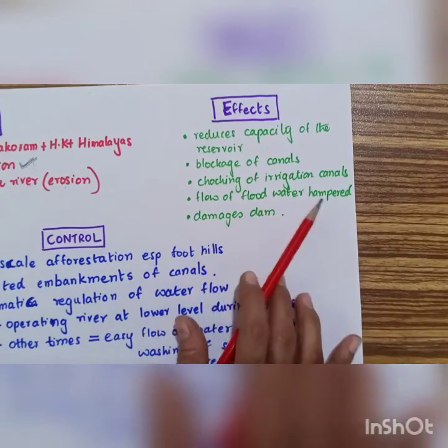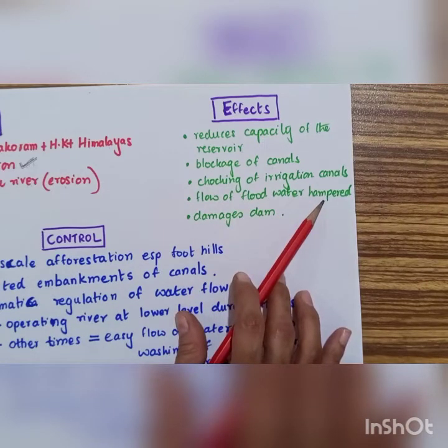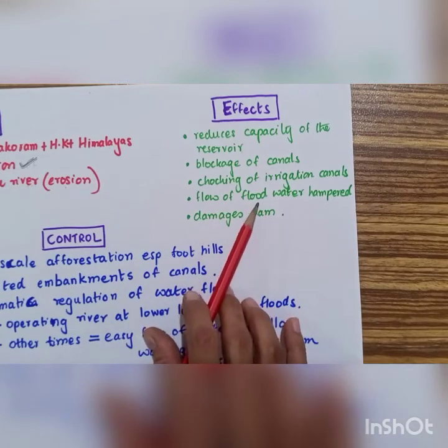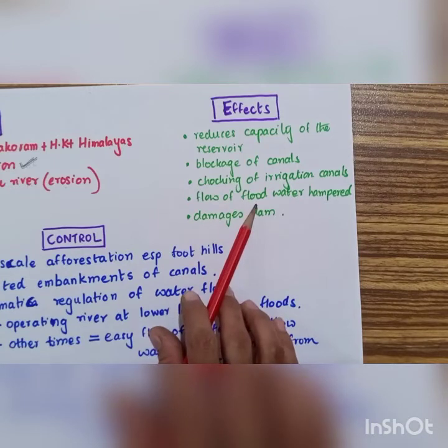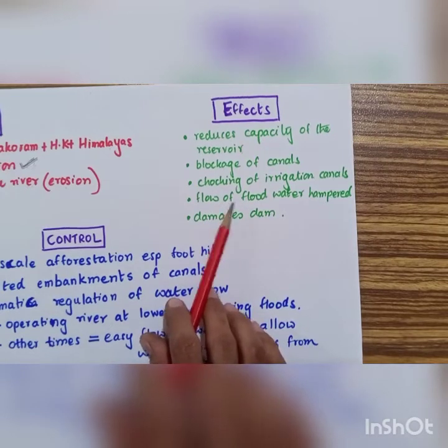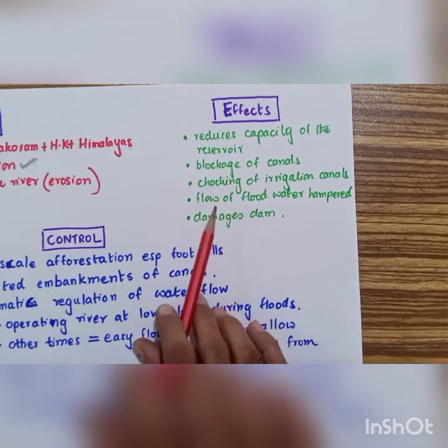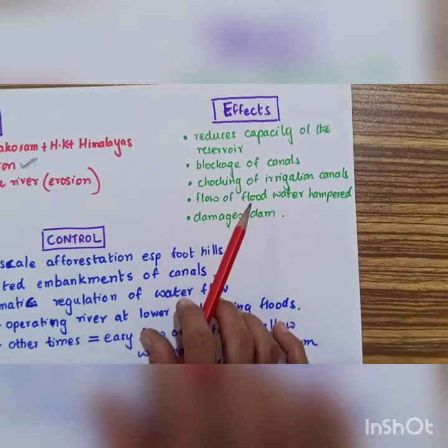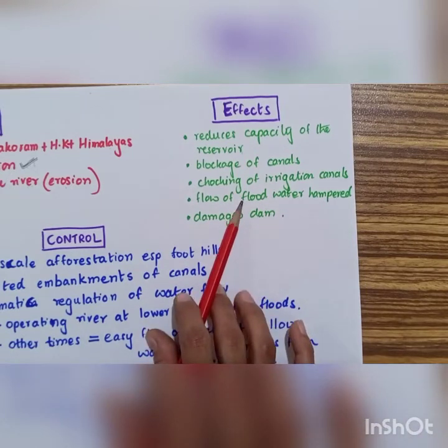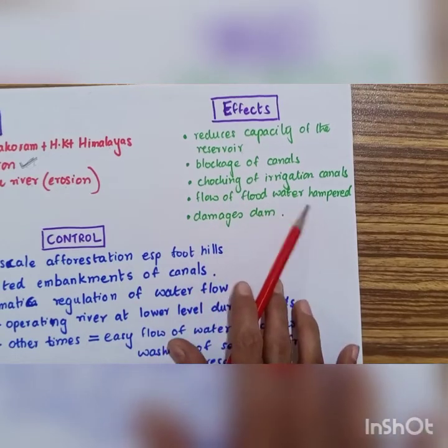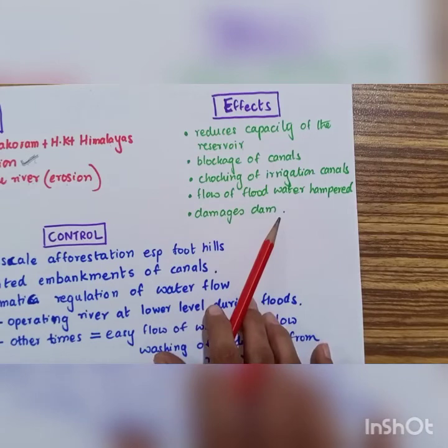Then the flow of the flood water is also hampered because our country is at present facing terrible damages because of floods. One of the reasons why we could not manage this menace of flood is because of siltation as well. The capacity of our reservoirs is less. The capacity of the canals and the rivers, their banks, they've already been damaged by siltation and there was no repair done so far. This also results in the flow of the flood water being hampered and then it finally damages the dam.